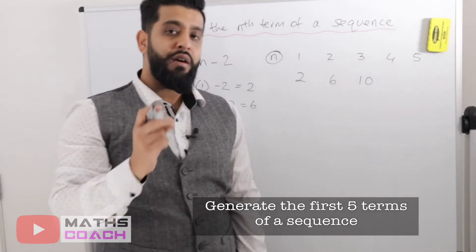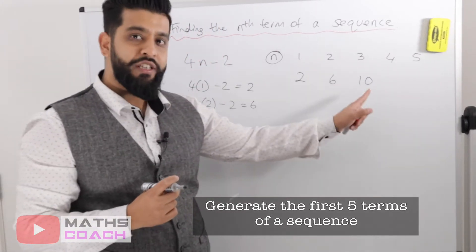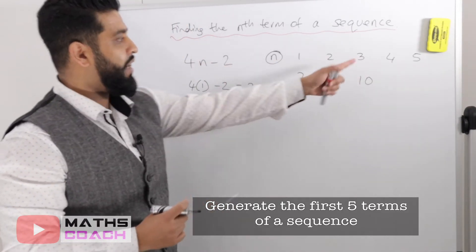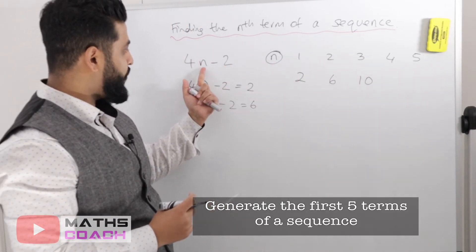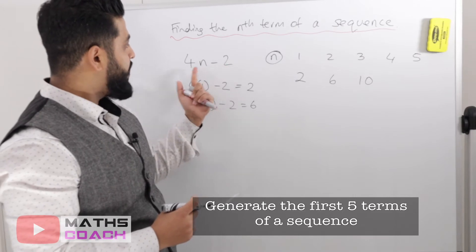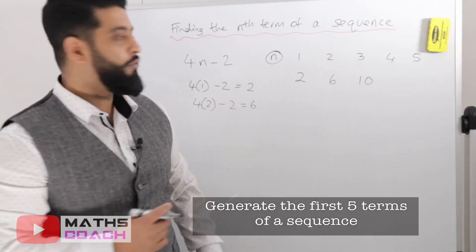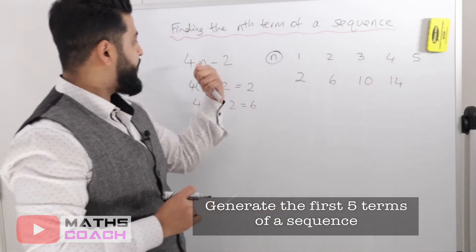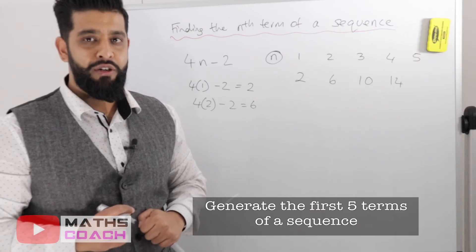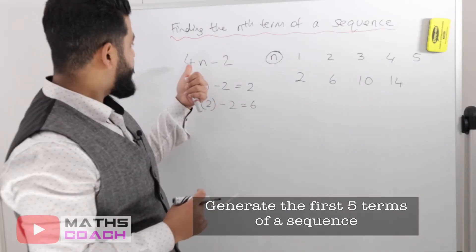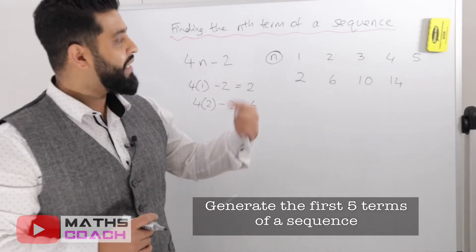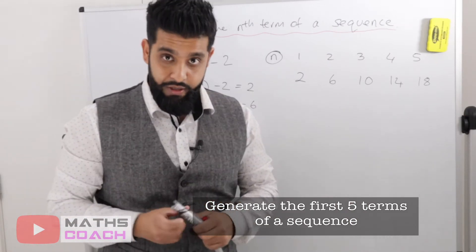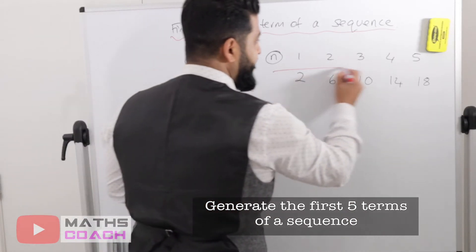You may start noticing something, but I'll finish the sequence first. For n equals 4: 4 times 4 is 16, take away 2 is 14. You can pause and try n equals 5 yourself. 4 times 5 is 20, take away 2 is 18.